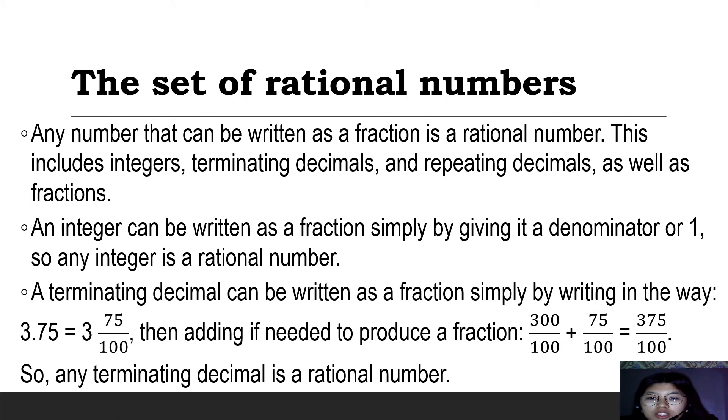A terminating decimal can be written as a fraction simply by writing it in the proper way. For example, 3.75: the whole number is 3, and 0.75 becomes 75 over 100 based on the two decimal places. So 75 over 100 is equivalent to 0.75.